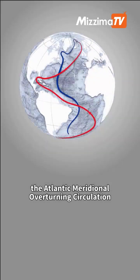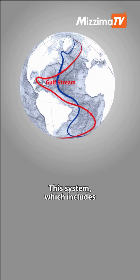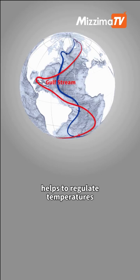AMOC, the Atlantic Meridional Overturning Circulation, is a system of ocean currents. This system, which includes the Gulf Stream, helps to regulate temperatures in the northern hemisphere.